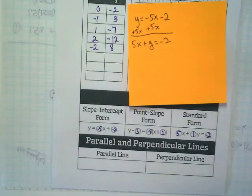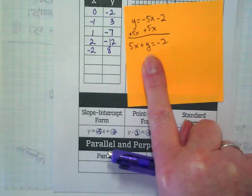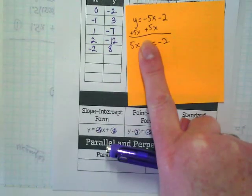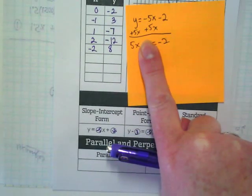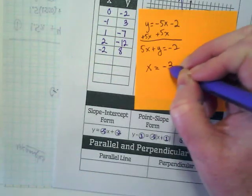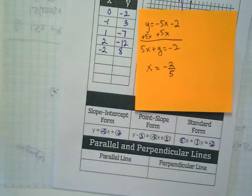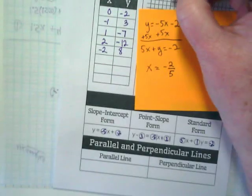Okay. With that, can I find my x-intercept now? If I say that y is equal to 0, what's my x going to be? x is equal to negative 2/5. And that's going to be my x-intercept.